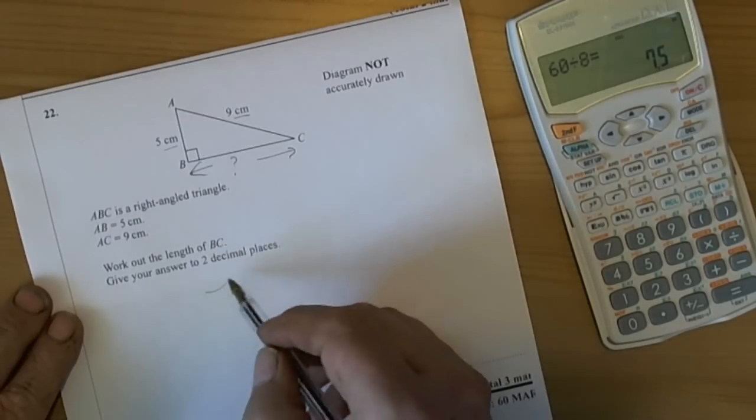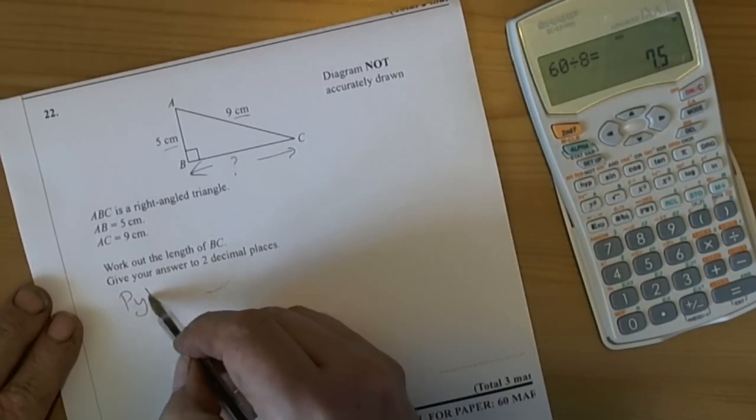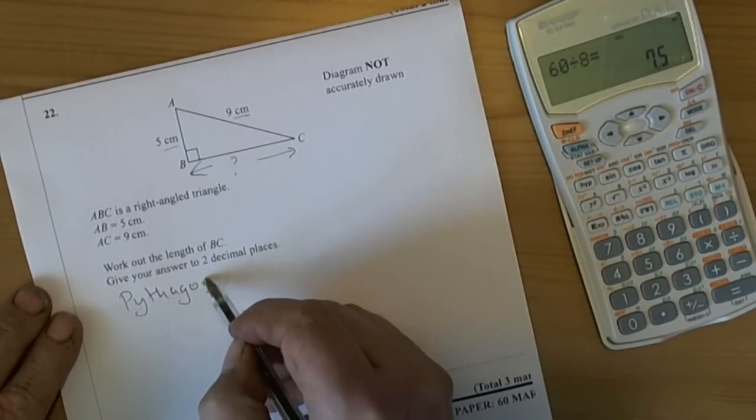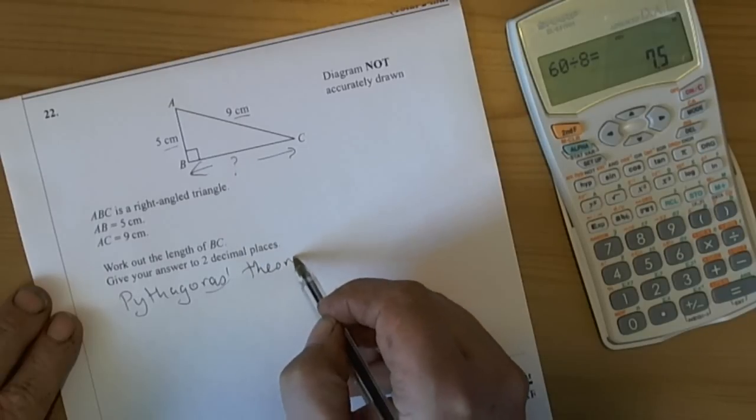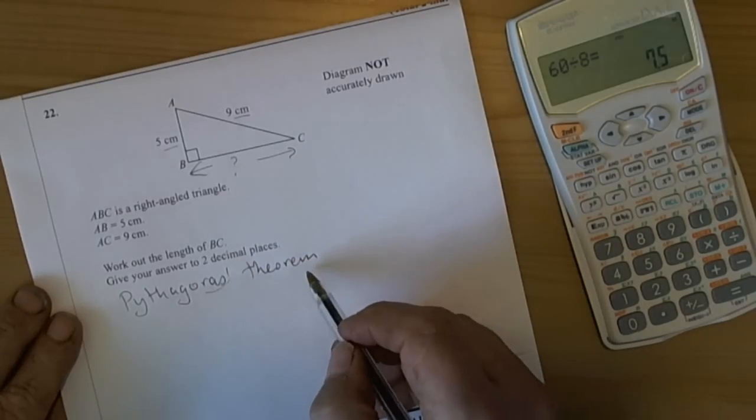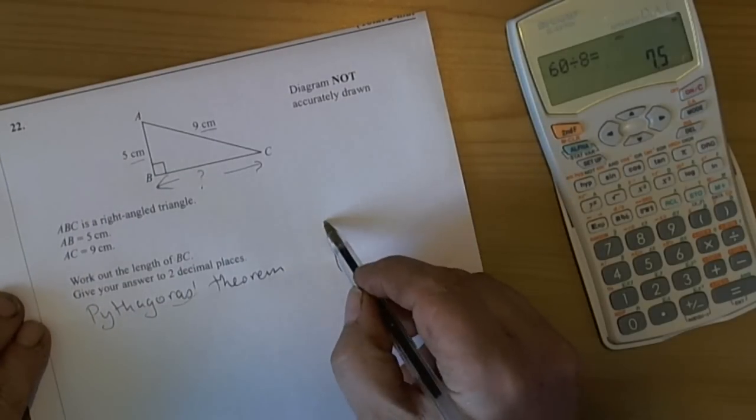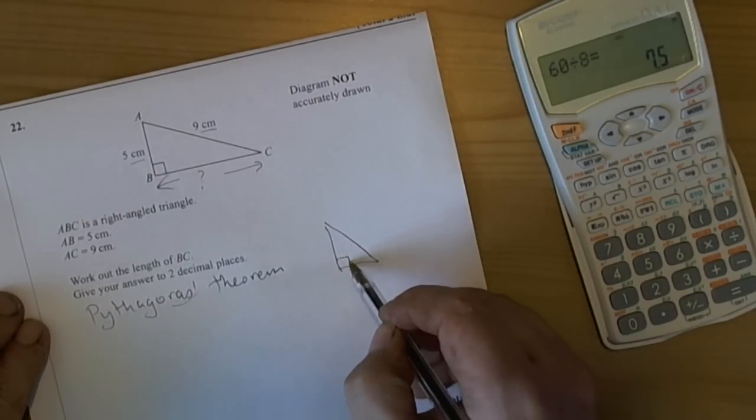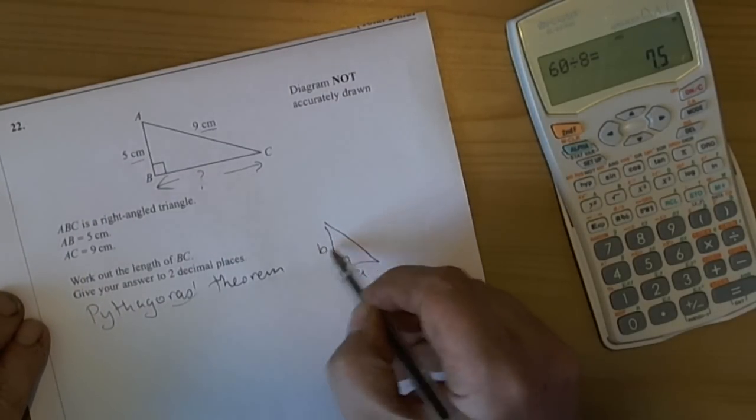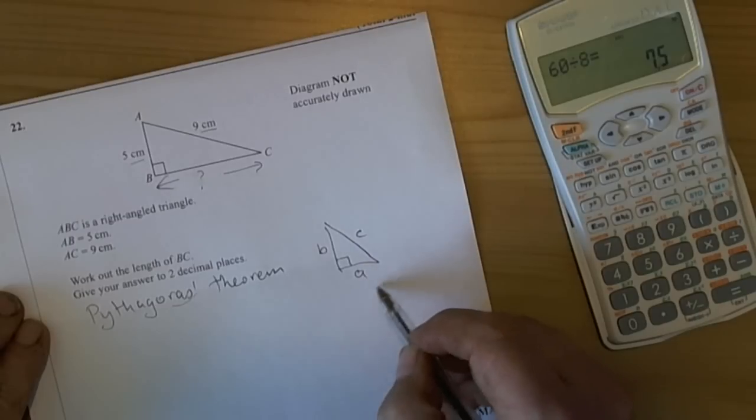Well this requires you to remember that there's a theory called Pythagoras' Theorem and you need to be using that theorem. Advice as always is you should draw out what the theorem is so that it reminds you where you're putting all the letters and numbers.